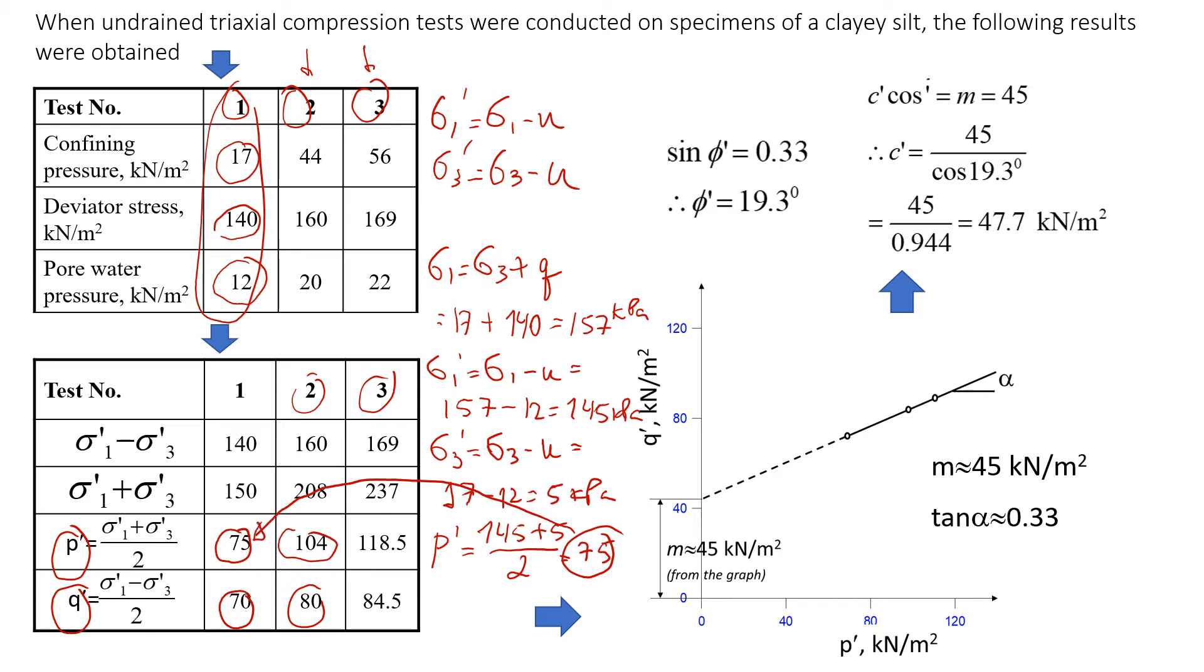And sigma 1 minus sigma 3, that's the deviator stress. It doesn't matter if we have total stress conditions or effective stress conditions, it's going to be the same. But let's just verify this one. We'll see q dash is 145 minus 5 divided by 2. It will give us 70.